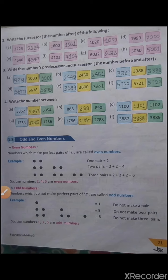We will write predecessor on the left side and successor on the right side. So the predecessor of 1000 is 999 and the successor of 1000 is 1001. And in B, the predecessor of 2450 is 2449 and the successor of 2450 is 2451.